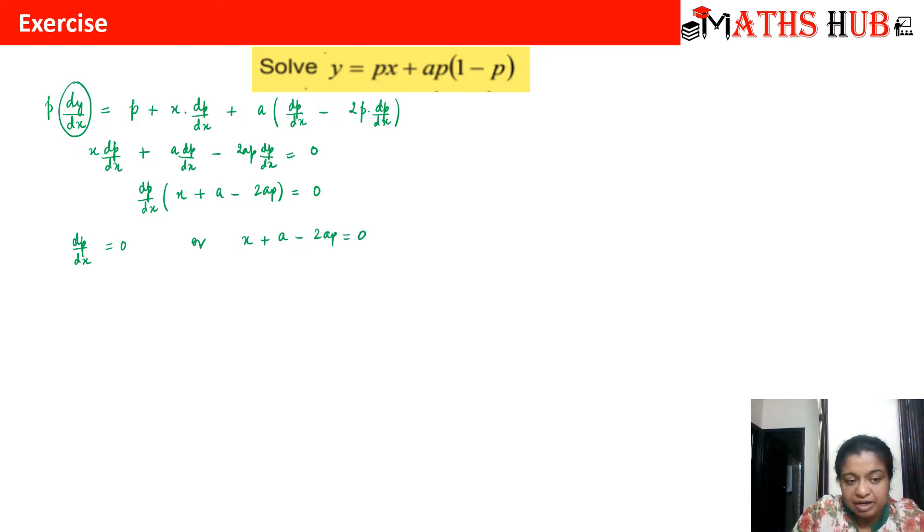If dp by dx equals 0, then on integrating p comes out to be some constant c. In the second case it is not necessary that you need to solve both equations. Since I need to eliminate p, I have already got the value of p, so I will substitute it back in the given equation.